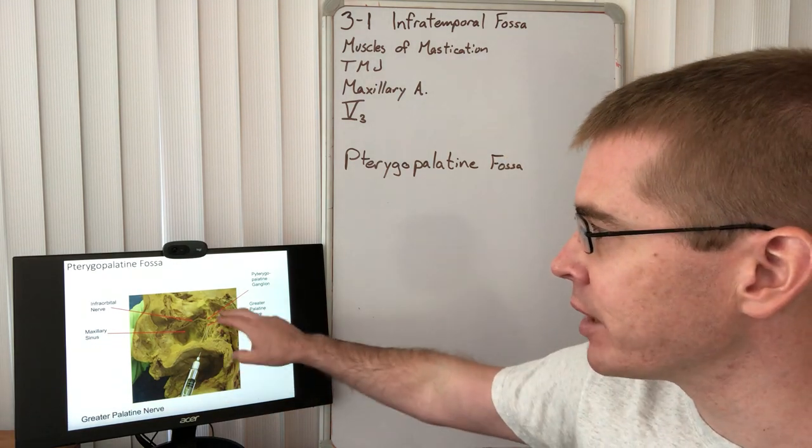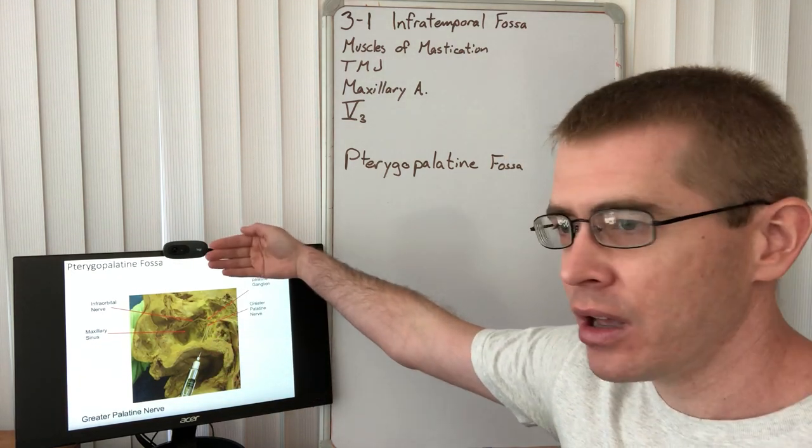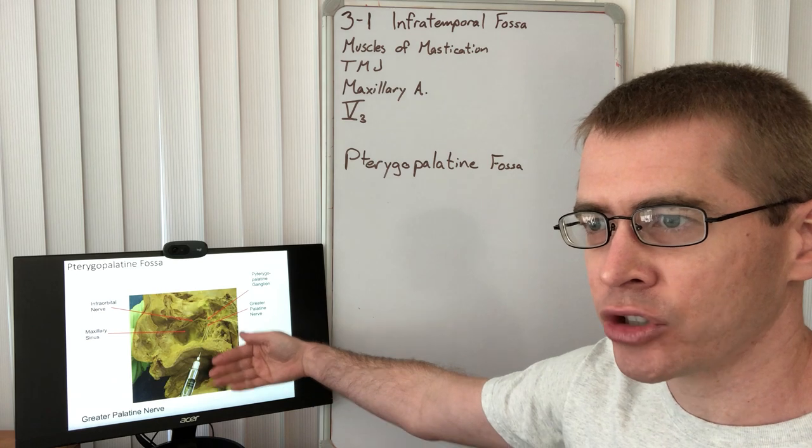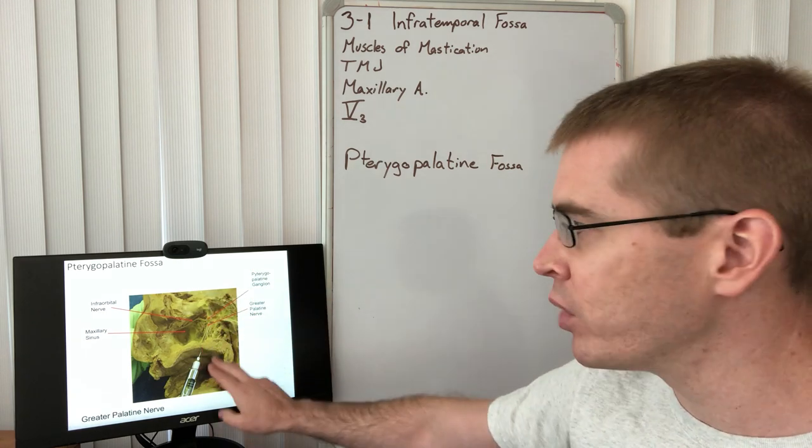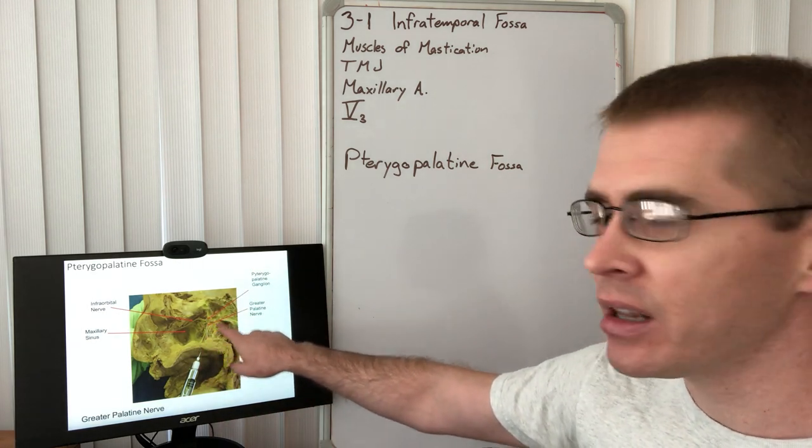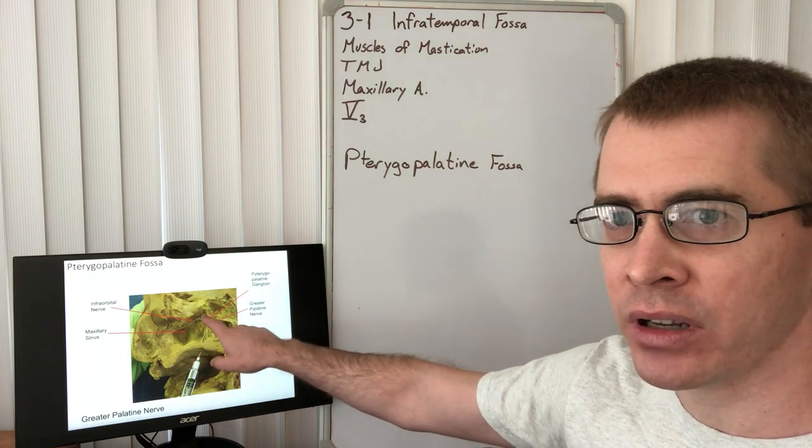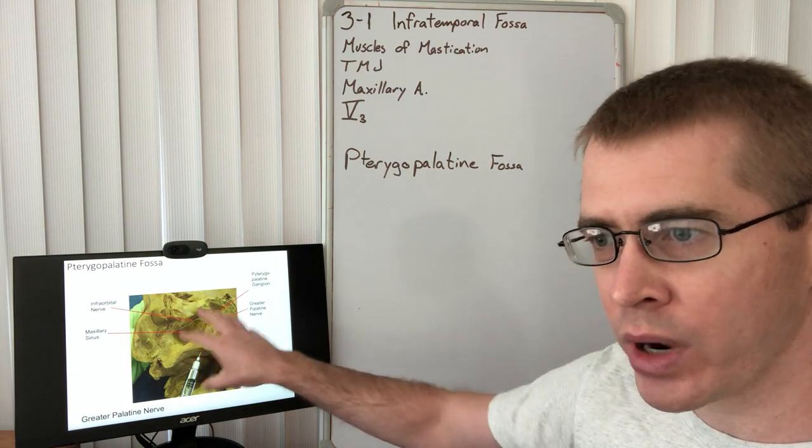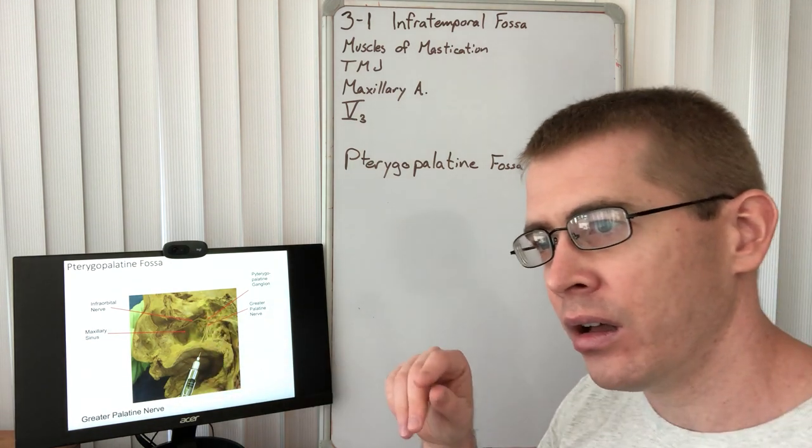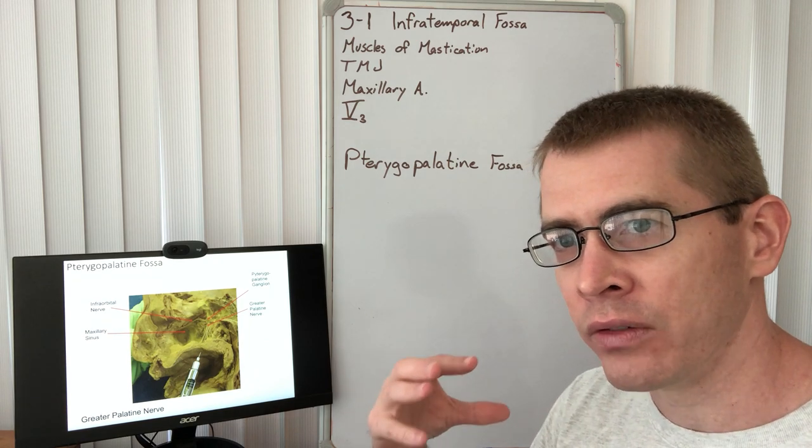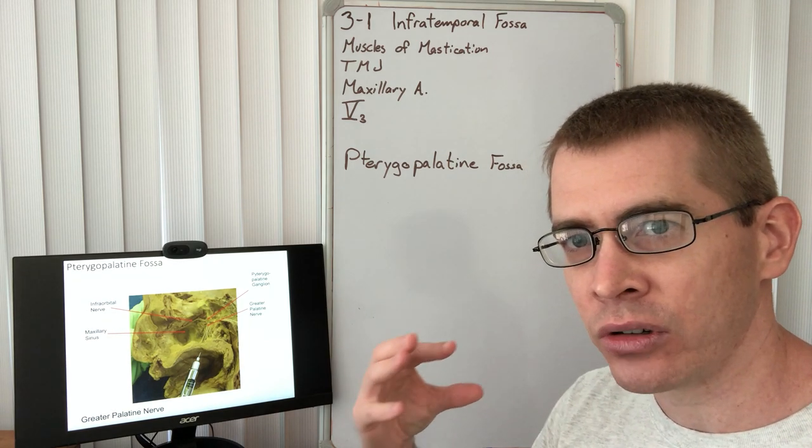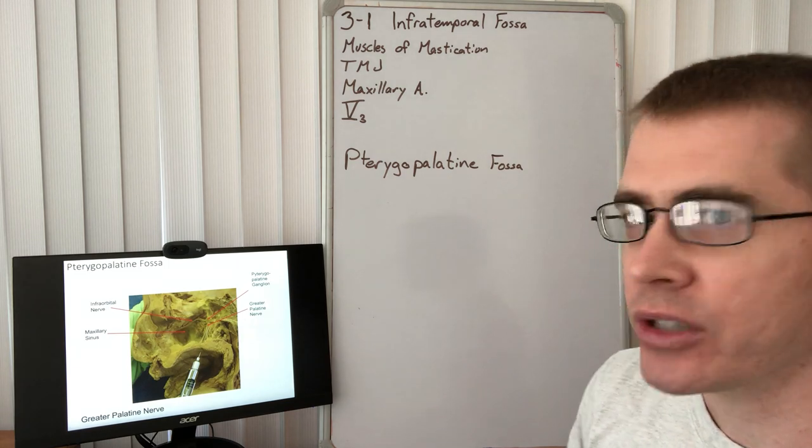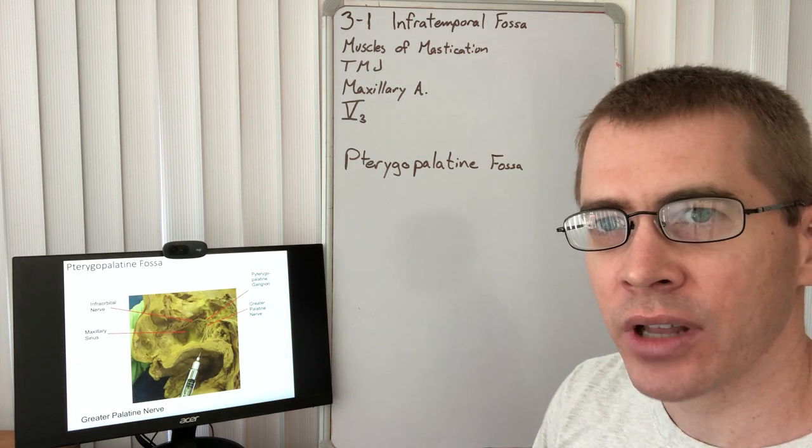So here is an example of that process. This is a mid-sagittal bisection of the skull where you can see the pterygopalatine ganglion has been revealed by chipping away at the lateral wall of the nasal cavity. So that's all I have for you for this lecture. Hope you enjoyed.